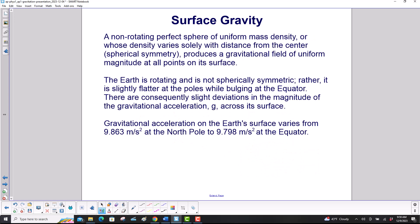A non-rotating perfect sphere of uniform mass density or whose density varies solely with distance from the center, which is spherical symmetry, produces a gravitational field of uniform magnitude at all points on its surface. The Earth is rotating, however, and it is not spherically symmetric. Rather, it is slightly flatter at the poles while bulging at the equator. There are consequently slight deviations in the magnitude of the gravitational acceleration, g, across its surface. It varies from 9.863 meters per second squared at the North Pole to 9.798 meters per second squared at the equator.